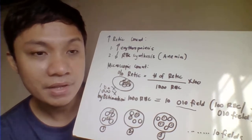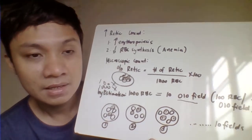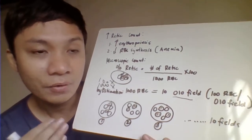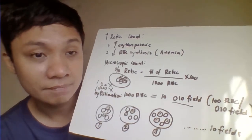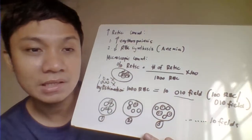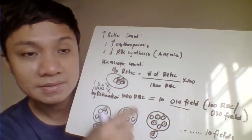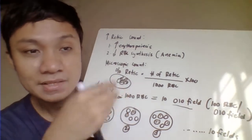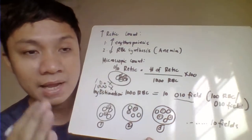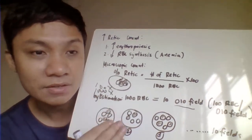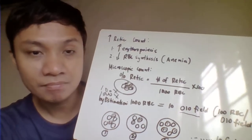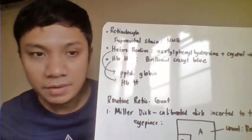When you increase the number of fields to reach 1000 RBCs in an anemic patient, you also increase the chance of finding and counting reticulocytes. As you add more fields, the reticulocyte count increases — this results in a false increase in reticulocyte count in the case of anemia. A correction for reticulocyte count in anemia will be discussed later.